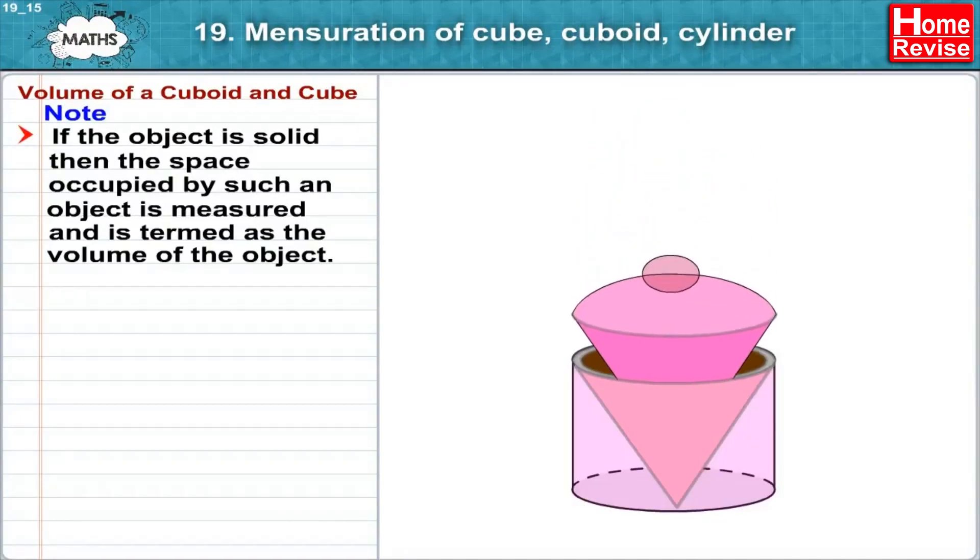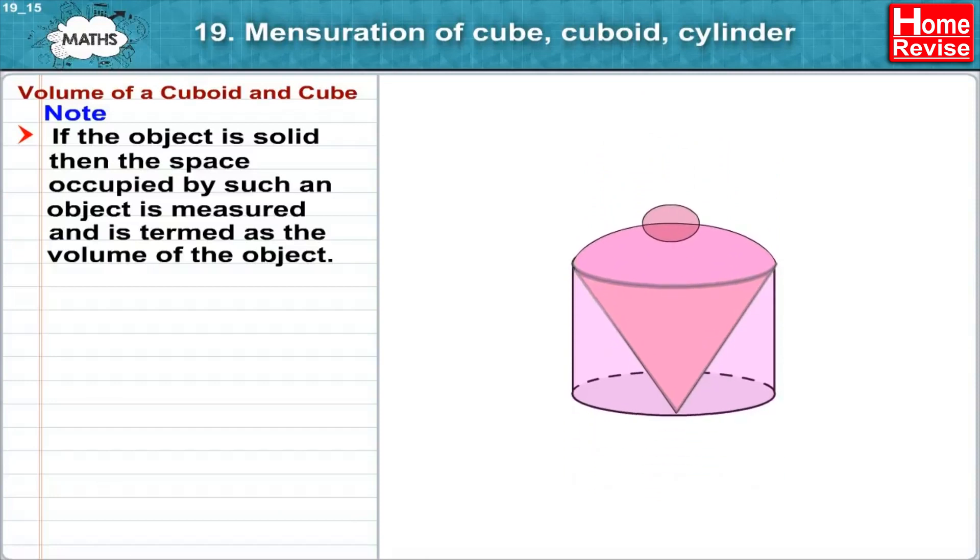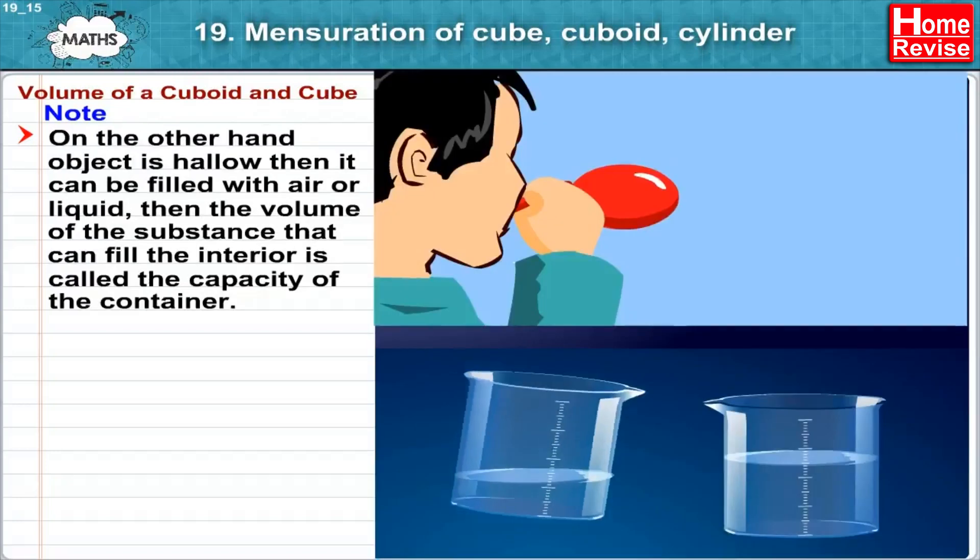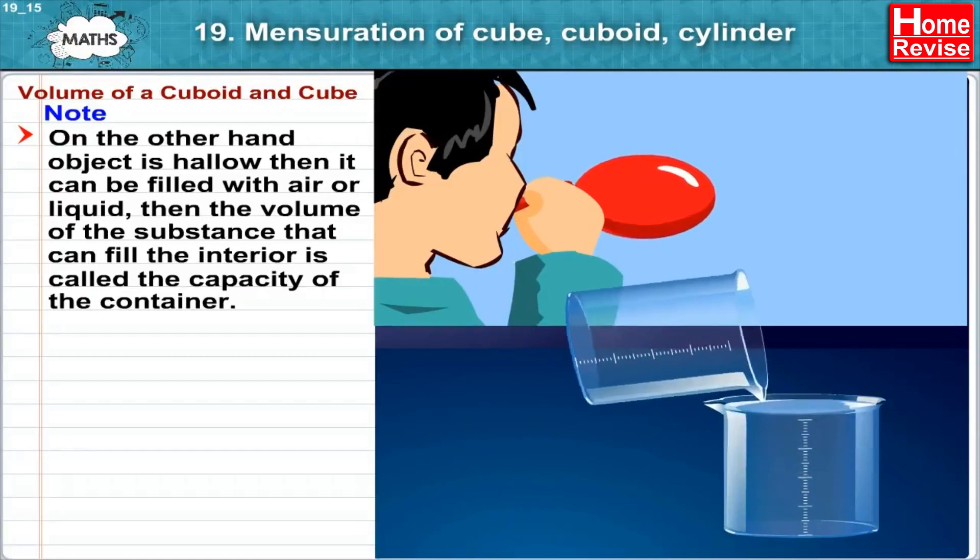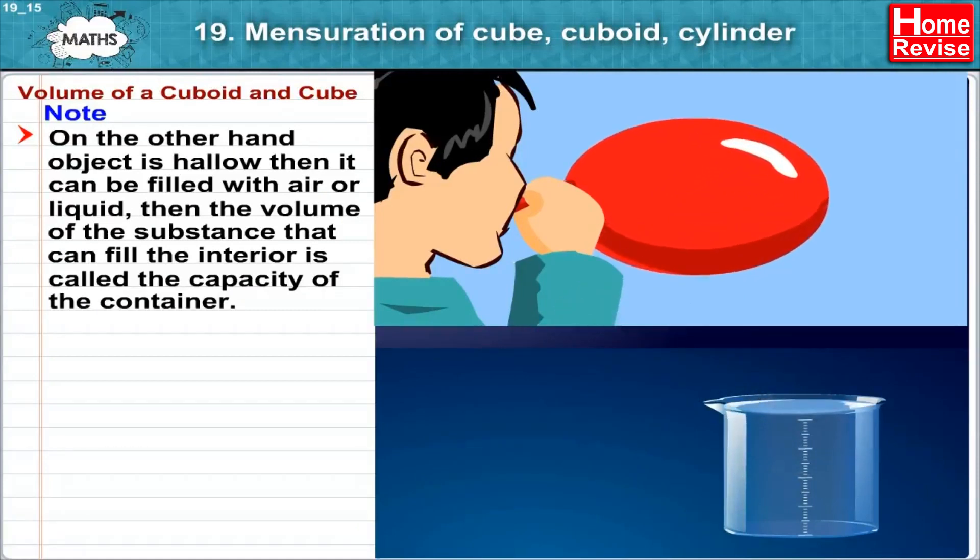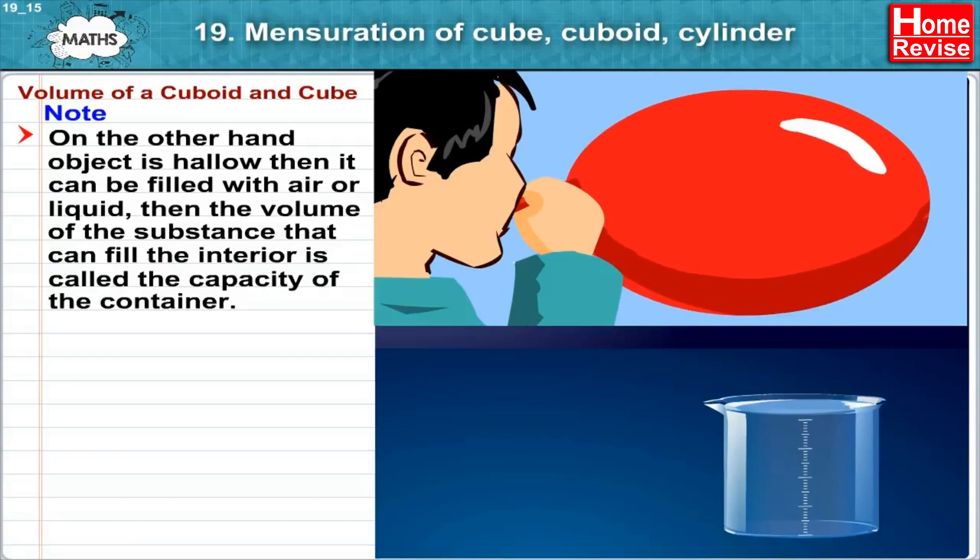Note, if the object is solid, then the space occupied by such an object is measured and is termed as the volume of the object. On the other hand, if the object is hollow then it can be filled with air or liquid. Then, the volume of substance that can fill the interior is called the capacity of the container.